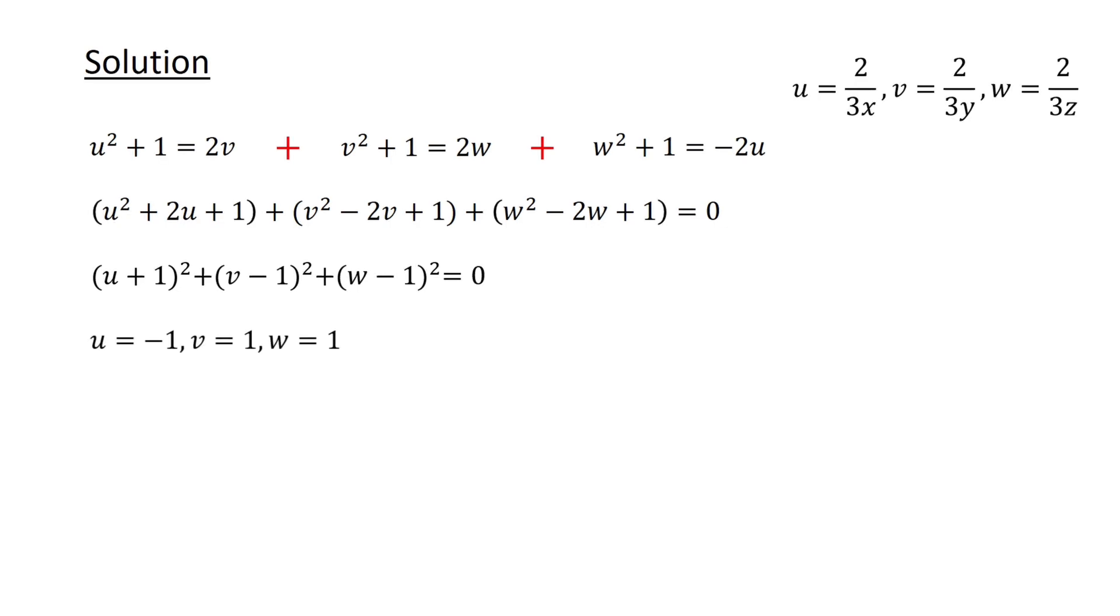Since the left-hand side is the sum of three non-negative terms, it can only be 0 if each of the terms is 0. Therefore, we have u is equal to minus 1, v is equal to 1, and w is equal to 1.